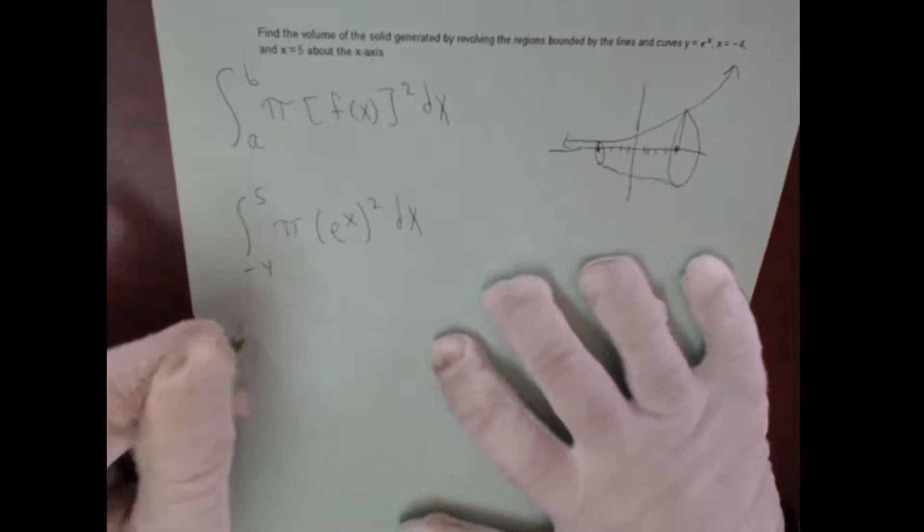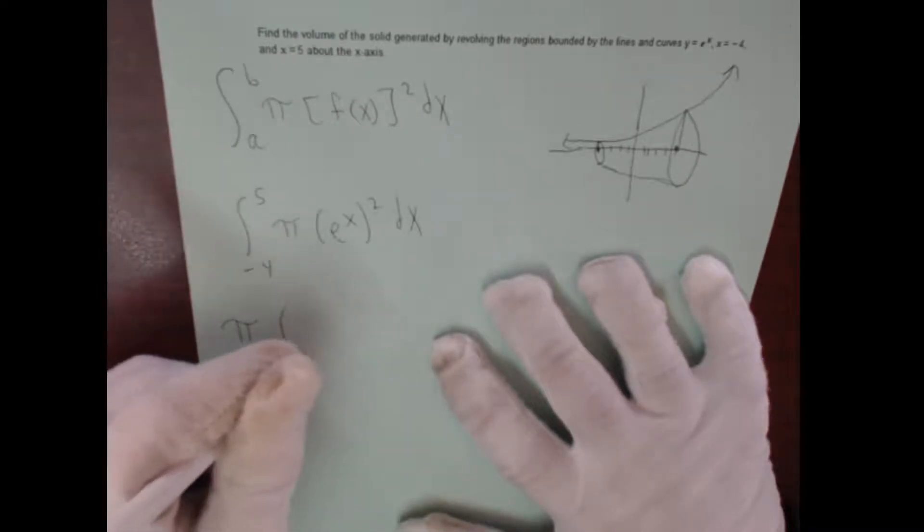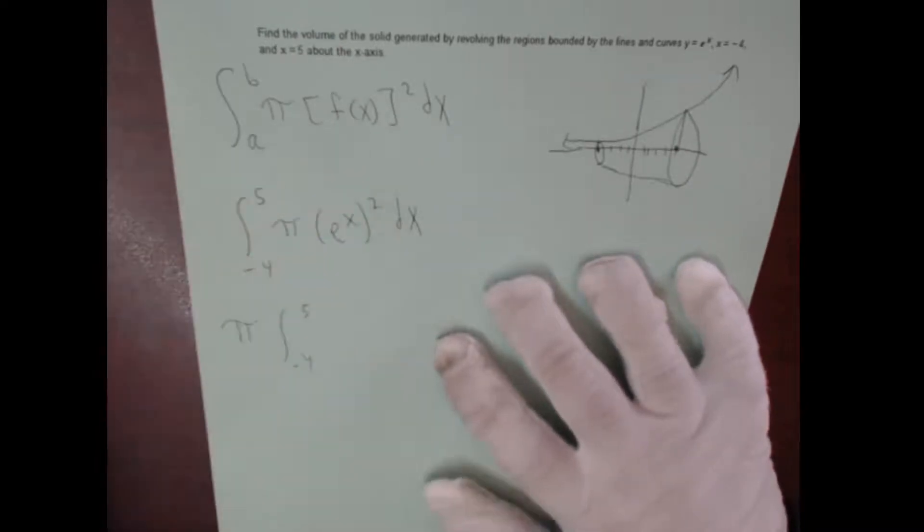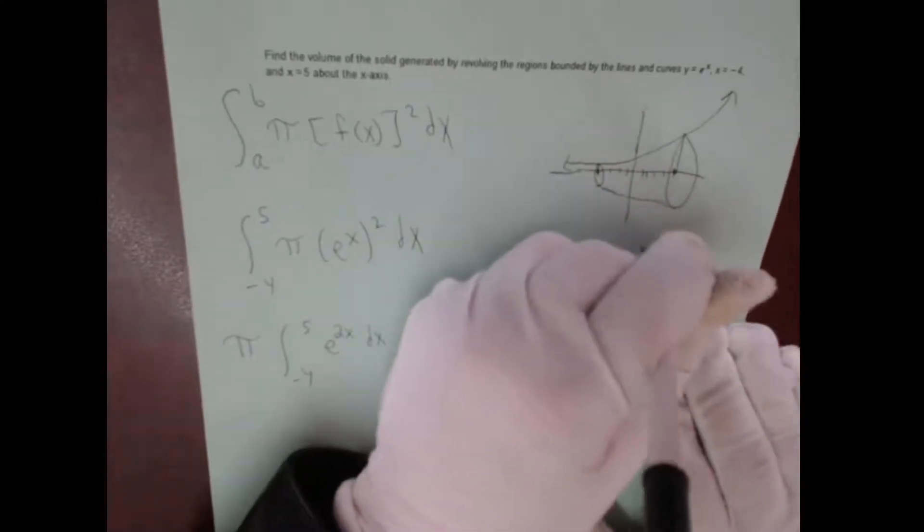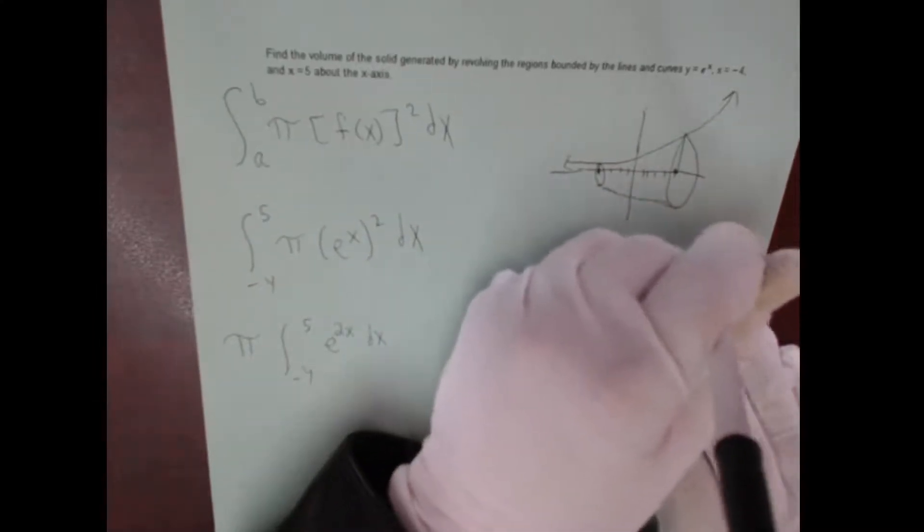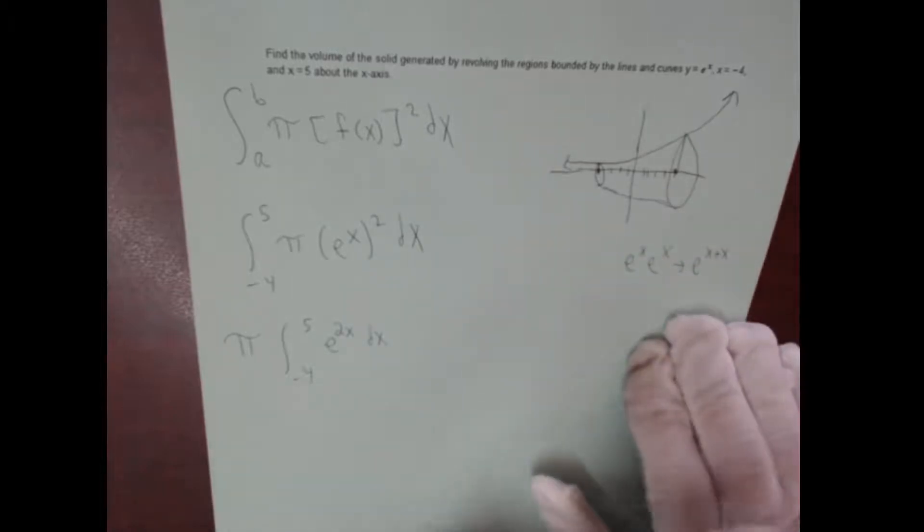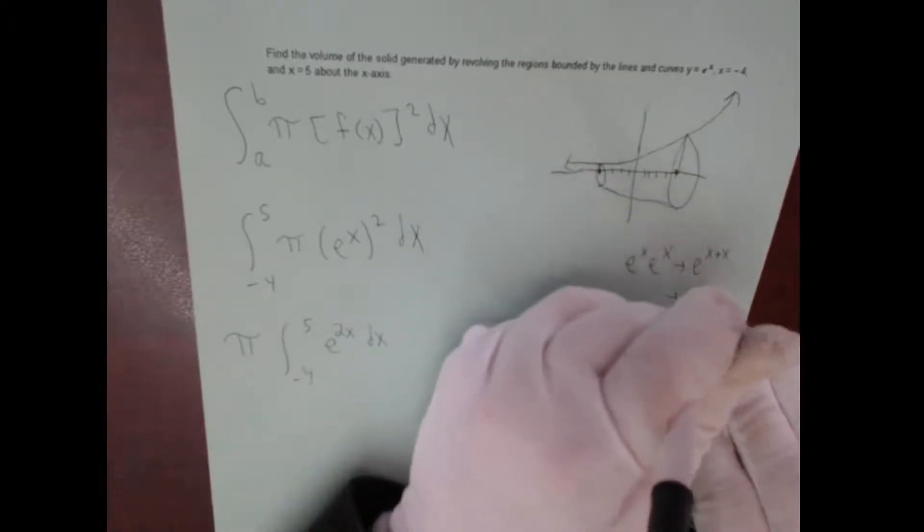So if we keep going, this will be, pull the pi out, this will be negative 4 to 5. Notice that e to the x times e to the x is going to just be e to the 2x, and that's because, you know, e to the x times e to the x we have the same base and so you can add the powers. And so that's just e to the 2x right there.